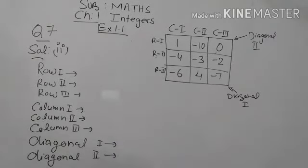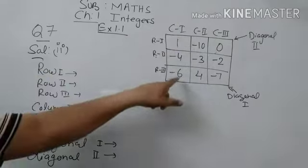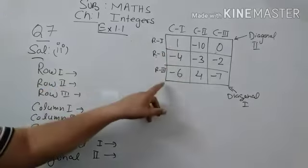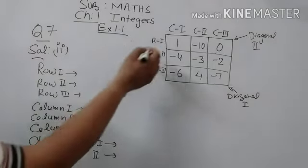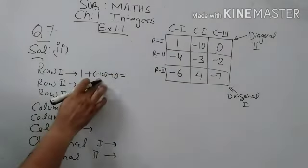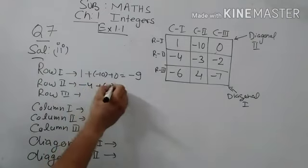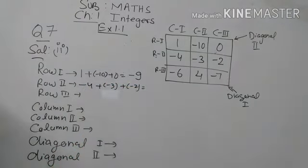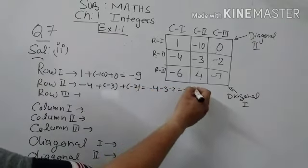Now we start part two of question seven. In this part, there is a square and we have to prove that it is a magic square. We add the integers of row one: 1 plus minus 10 plus 0 equals minus 9. For row two: minus 4, minus 3, and minus 2, which also gives minus 9.